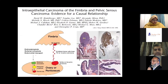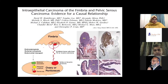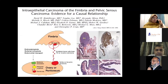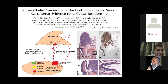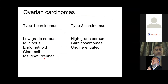Coming to high-grade ovarian cancers: it is now well known that up to 50 to 70% of what we call ovarian cancers originate in the fimbriated end of the fallopian tube. Something known as a pre-invasive lesion — STIC, or serous tubal intraepithelial carcinoma — develops in the fimbriated end of the fallopian tube, drops onto the ovary, and presents as a large ovarian mass by the time it reaches the clinician. Most high-grade serous cancers of the ovary actually originate from the fimbriated end.